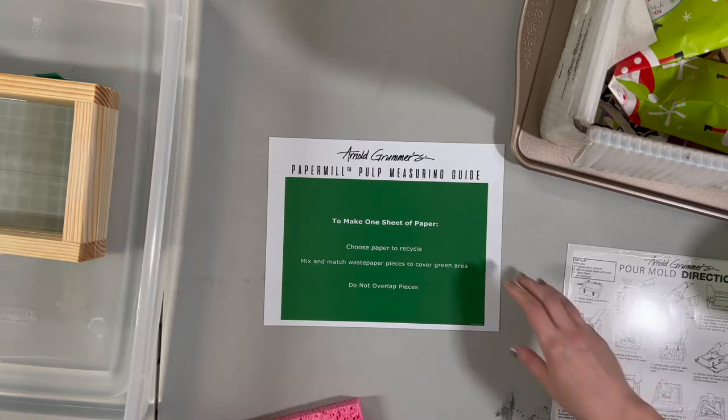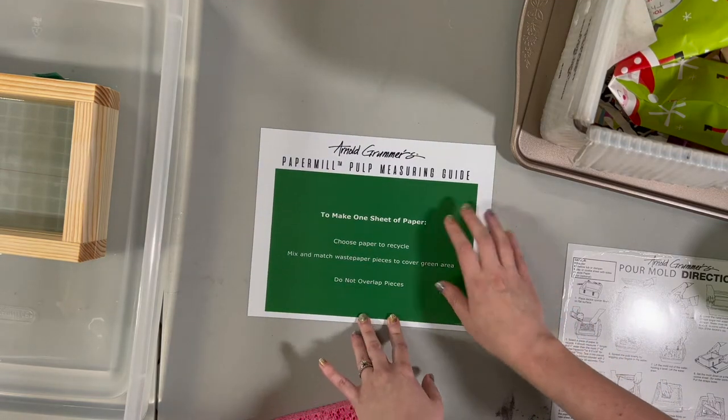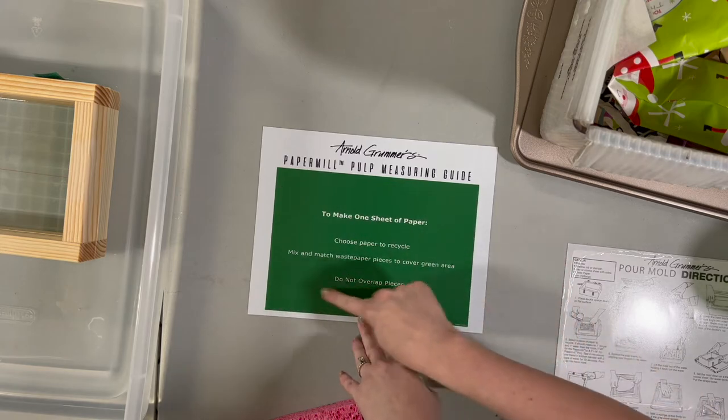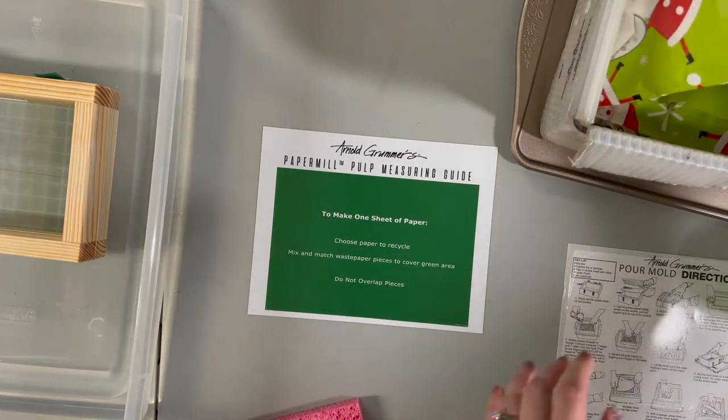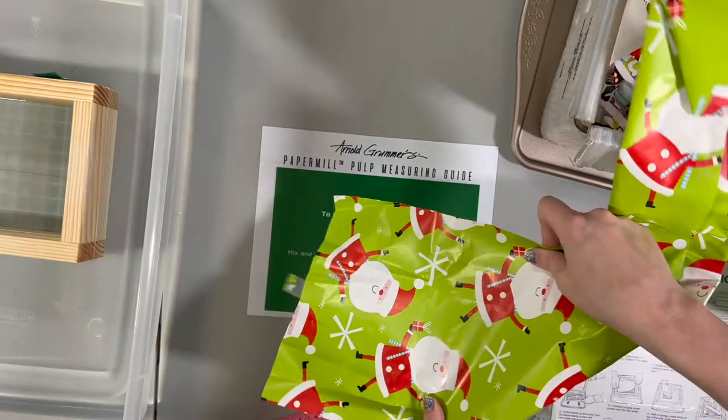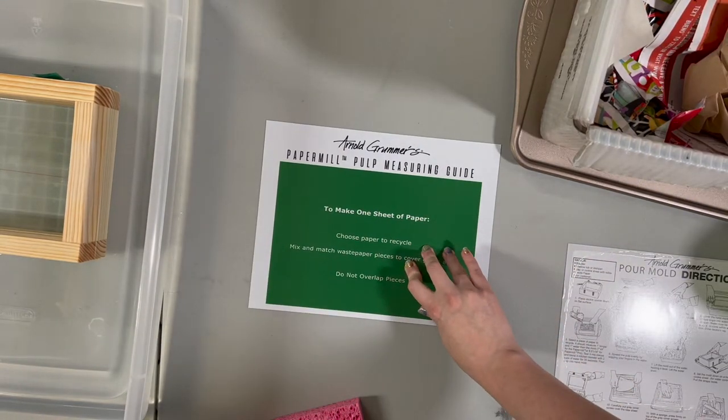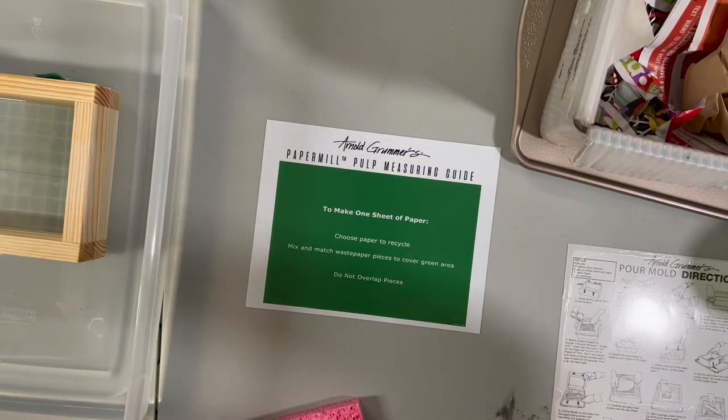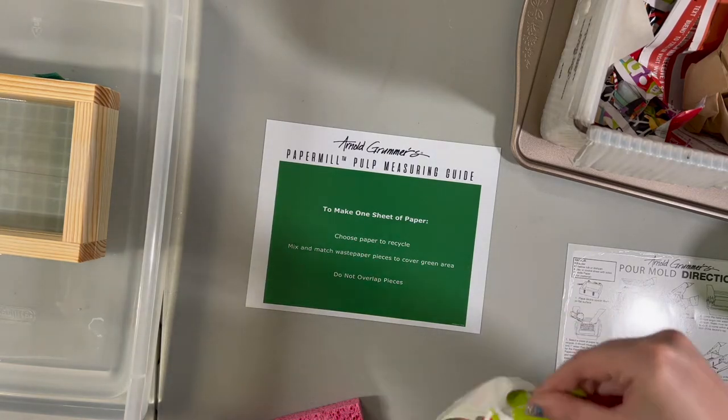Giving me this guide of how much paper we need to make a new sheet. Since I'm going to use wrapping paper and it's pretty thin, I think I'm going to double up, maybe even triple up on this green rectangle instead of doing just a single layer. Let's see, I'm going to rip the tape off of here.